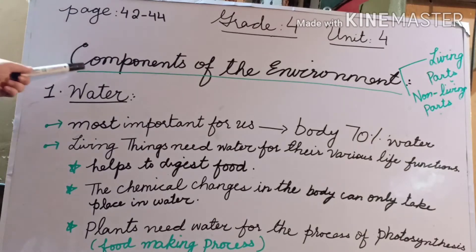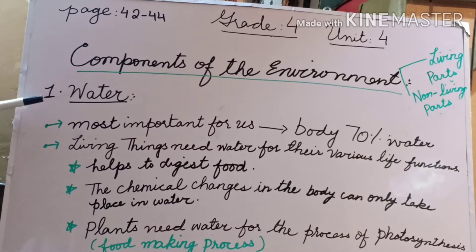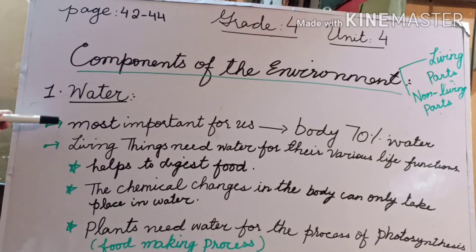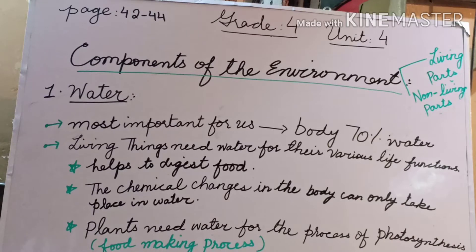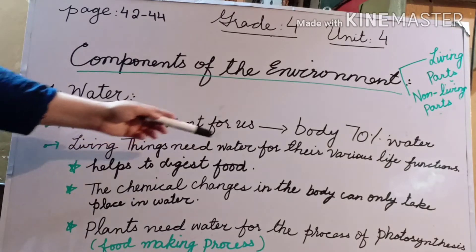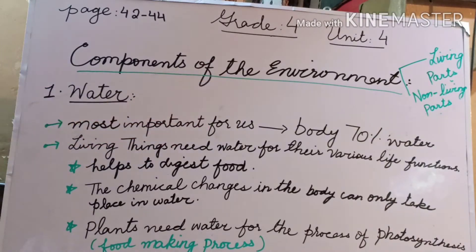We are going to discuss the components of the environment one by one. Firstly, the most important component of the environment is water. We are going to discuss some basic important functions of water and why it is important. Water is most important for us because our body is made up of 70% water. Living things need water for their various life functions.